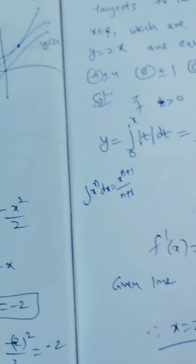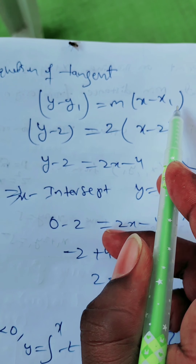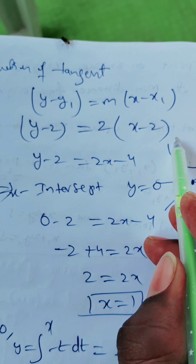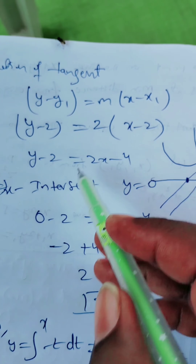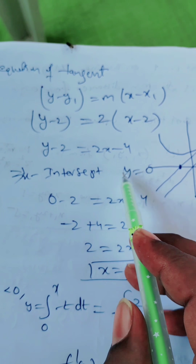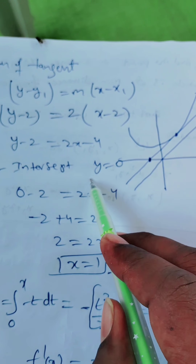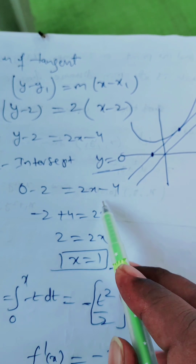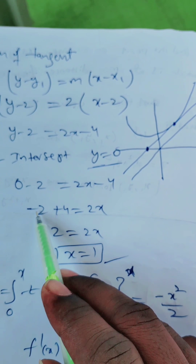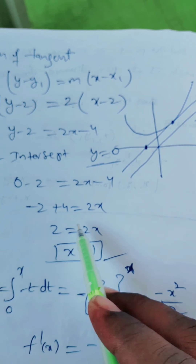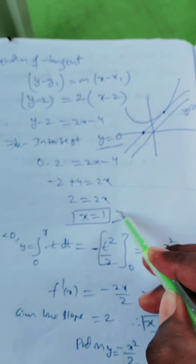We can now find the equation of the tangent. Using y minus y1 equals m times (x minus x1): y minus 2 equals 2 times (x minus 2), giving y minus 2 equals 2x minus 4. To find the x-intercept, put y equal to 0: 0 minus 2 equals 2x minus 4, so 2x equals 2, giving x equal to 1.